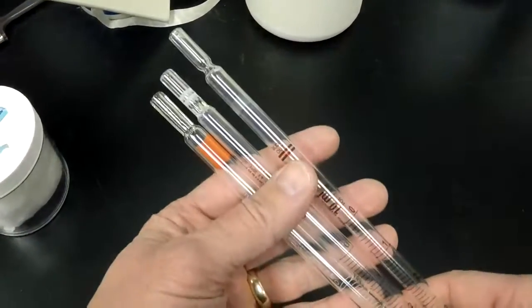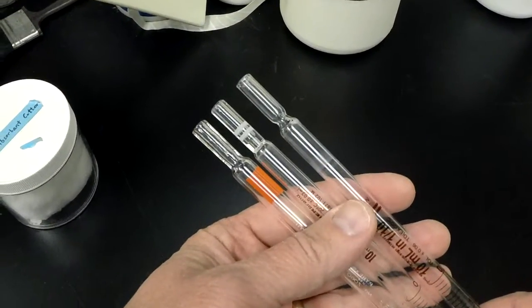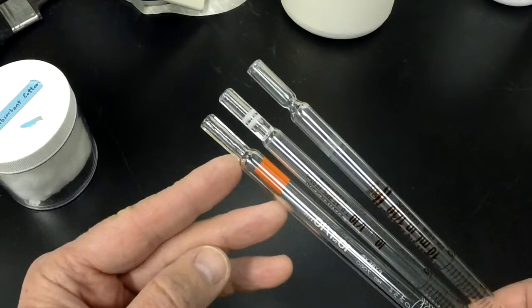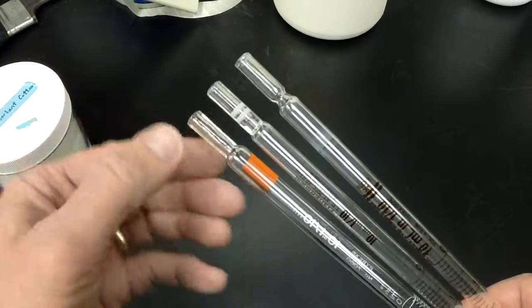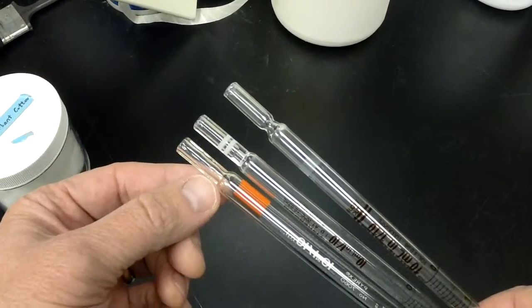First thing to understand is that when you take a look at pipettes, some are actually designed for being stuffed and some are not. The one on the bottom here, you can see it's just straight through, and that's not good because if you try to put cotton inside there, it's going to pass right down through.